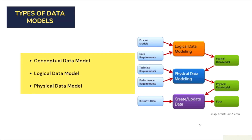There are three different kinds of data models: conceptual, logical, and physical. The conceptual data model defines what the system contains and is created by business stakeholders and data architects - its purpose is to organize scope and define business concepts and rules. The logical data model defines how the system should be implemented regardless of the DBMS, created by data architects and business analysts to develop a technical map of rules and data structures. The physical data model describes how the system will be implemented using a specific DBMS, created by DB developers for actual implementation.